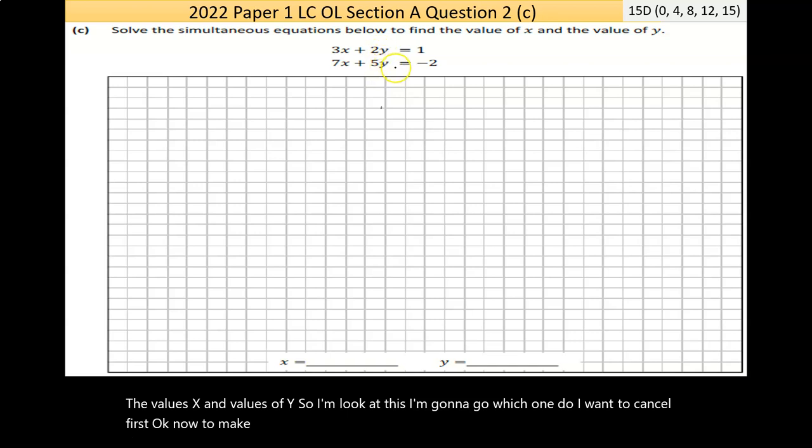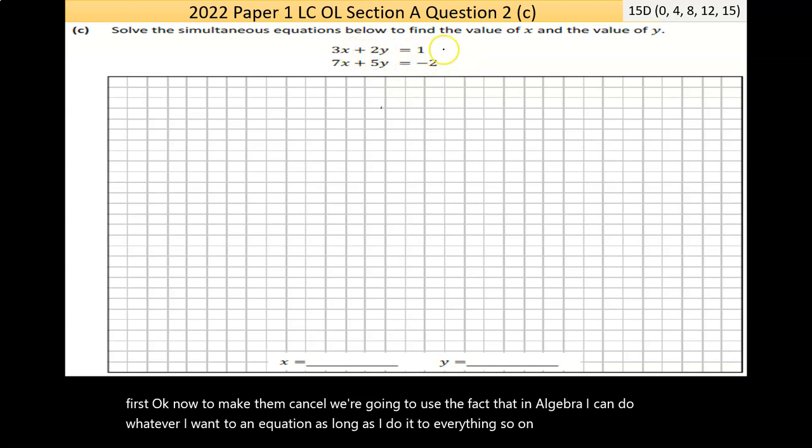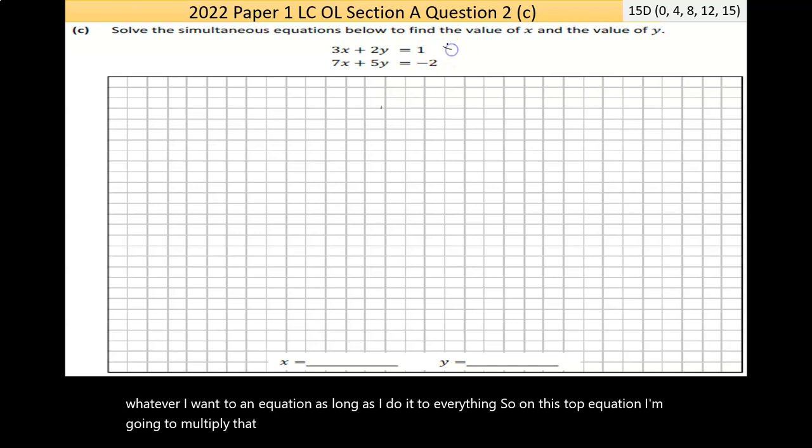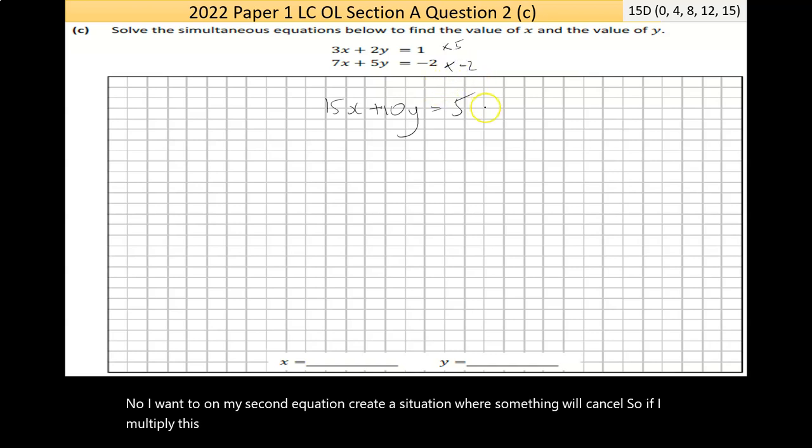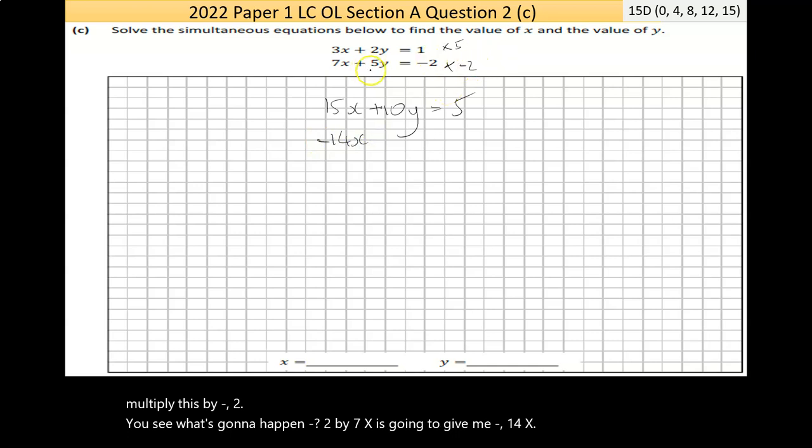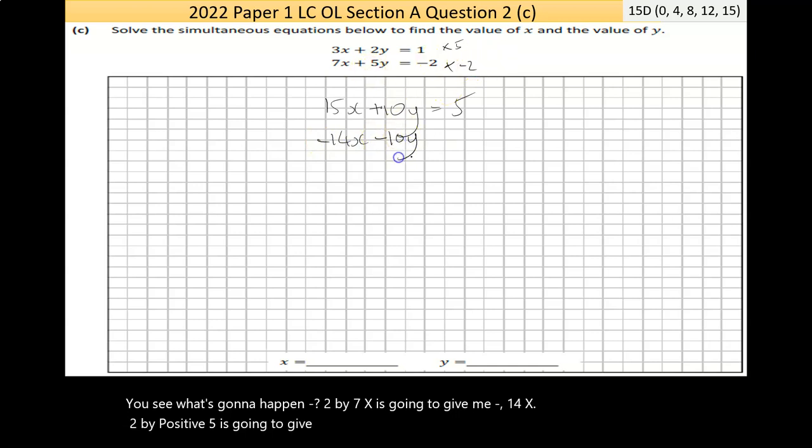Now, to make them cancel, we're going to use the fact that in algebra, I can do whatever I want to an equation, as long as I do it to everything. So on this top equation, I'm going to multiply that by 5. If I multiply every term by 5, I'm going to end up with 15x, 2y by 5 is 10y, is equal to 1 by 5 is 5. So I've just made it five times bigger. Now, I want to, on my second equation, create a situation where something will cancel. So if I multiply this by negative 2, you'll see what's going to happen. Negative 2 by 7x is going to give me negative 14x. Negative 2 by positive 5 is going to give me negative 10y. And then negative 2 by negative 2 is going to give me a positive 4.